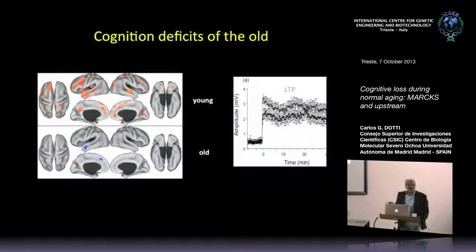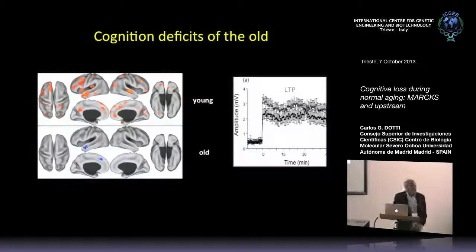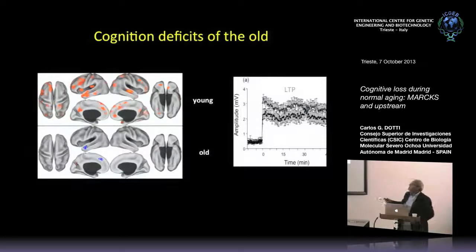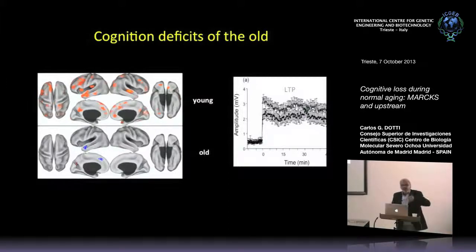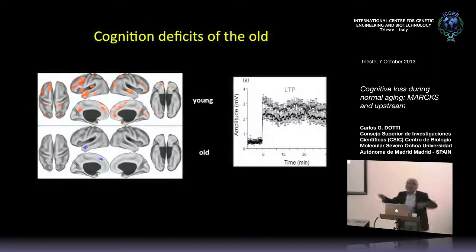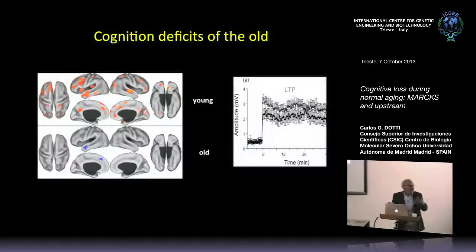One easy way to see these things in experiments is to do electrical recording on neurons. You put a patch, do a stimulus — a high-frequency stimulus — and you see a learning paradigm. After the high-frequency stimulation you stop, and the target neuron starts responding with activity. This is the activity of the young, which responds very intensely, and this is the activity of the old. So the same thing you see in brain imaging, you can see in an easier way with electrophysiology.